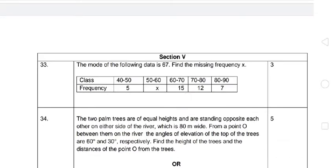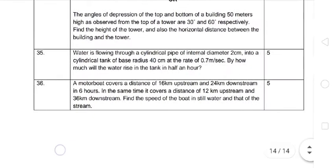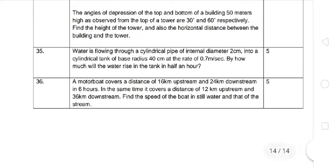Hello students, welcome back to my YouTube channel Supreme Learning Academy. Section 5, Question 35: Water is flowing through a cylindrical pipe of internal diameter 2 centimeter into a cylindrical tank of base radius 40 centimeter at the rate of 0.7 meter per second. By how much will the water level rise in the tank in half an hour? The pipe diameter is 2 cm and the speed is 0.7 meters per second.